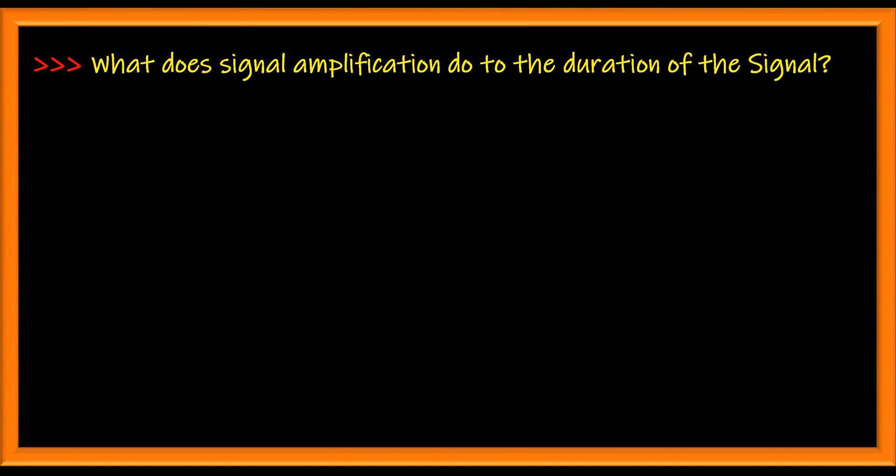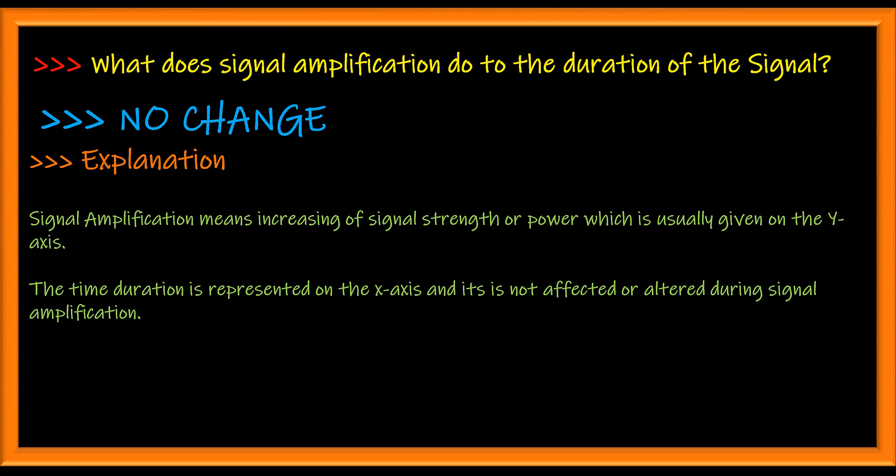What does signal amplification do to the duration of the signal? It doesn't have any effect on the duration of your signal, because amplification is increasing your signal strength along the y-axis, whereas the duration of your signal is on the x-axis. So the x-axis is not affected during signal amplification.